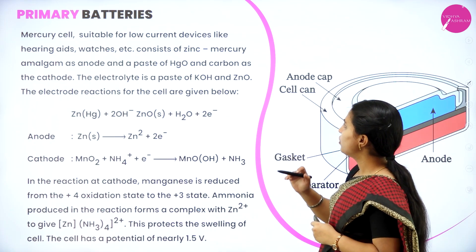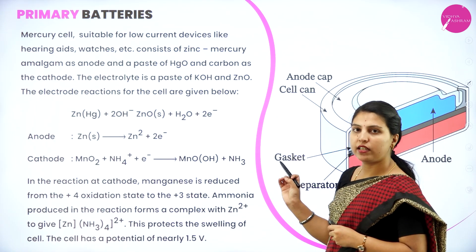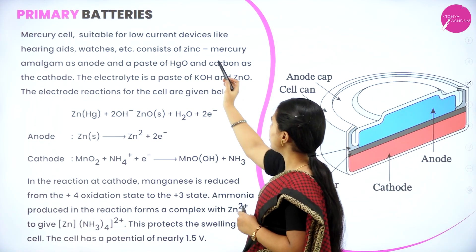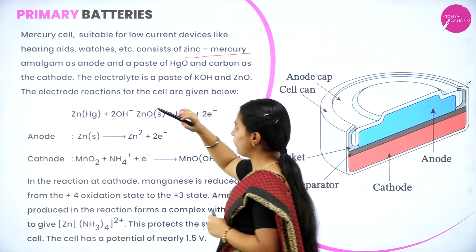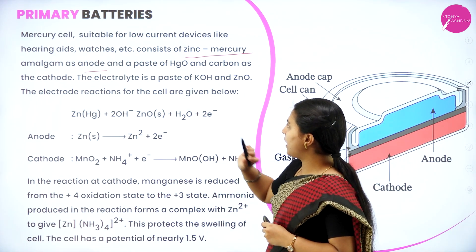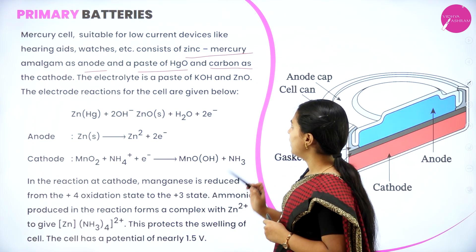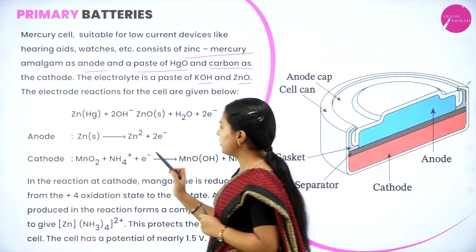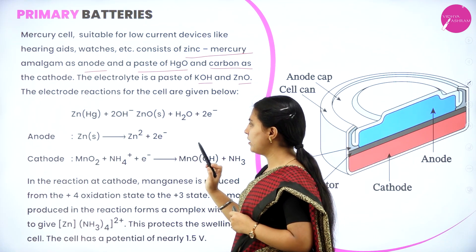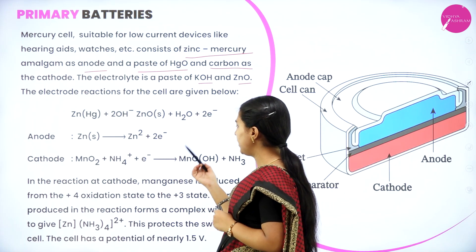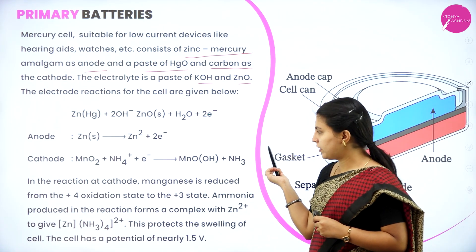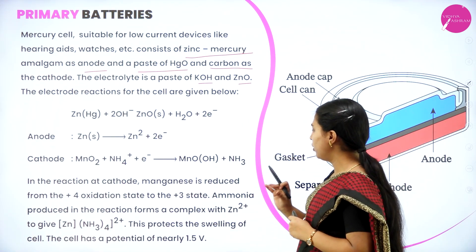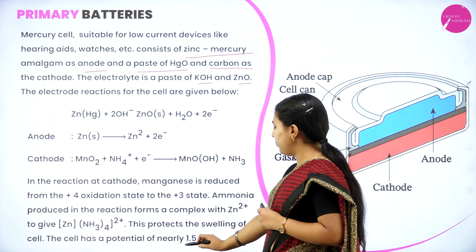Ammonia produced in the dry cell reaction forms a complex with zinc, which protects the swelling of the cell. The cell has a potential of nearly 1.5 volts. For the mercury cell — another primary battery suitable for low-current devices like hearing aids and watches — the anode is zinc-mercury amalgam and the cathode is a paste of mercury oxide and carbon. The electrolyte is a paste of potassium hydroxide and zinc oxide. Overall, manganese is reduced from +4 to +3 oxidation state, and the cell potential is 1.5 volts.